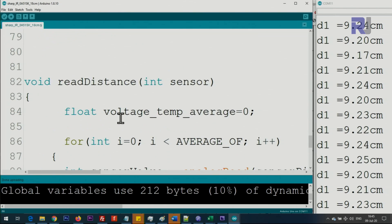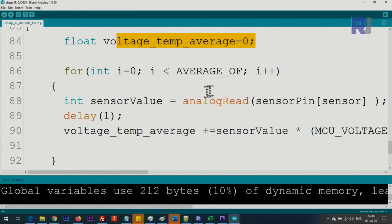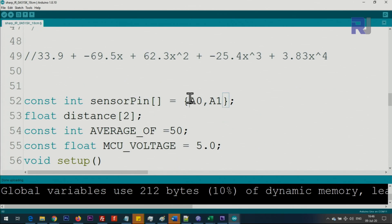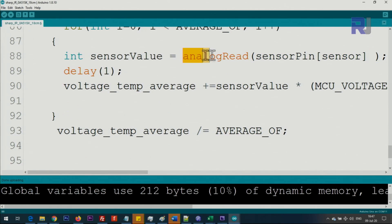This function is calculating the average and returning the value. You call 'read distance' and pass a value 0, 1, or 2, and this number will become the sensor index. We use voltage temporary average - this is a variable we use to hold the average values. Here we use analog read sensor pin, and we get the value. The sensor index comes here and picks up the value from the array - 0 means get this one, 1 means get the other one. This reads from that sensor pin.